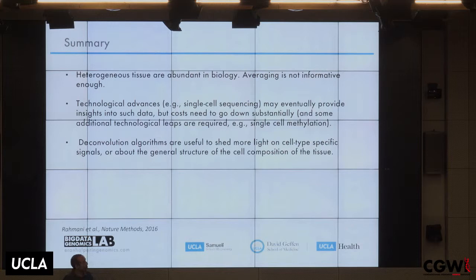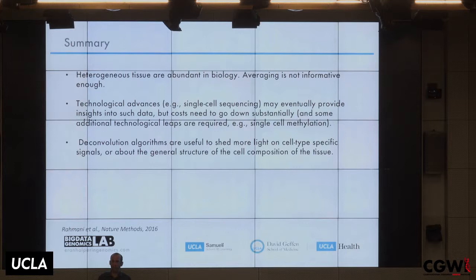In summary: heterogeneous tissues are everywhere in genomics and biology. Averaging across cell types, while technically convenient, is obviously not optimal. One approach is to improve technologies like single-cell sequencing, which may be cheap enough for large studies in 10-20 years — but not for methylation in the near future. In the meantime, we can do things in silico and try to computationally emulate cell-level resolution.